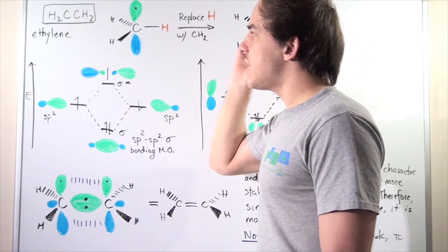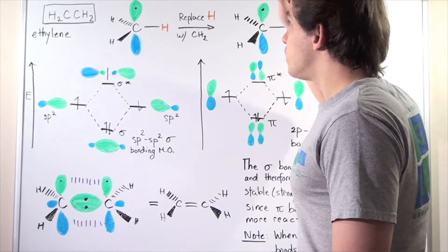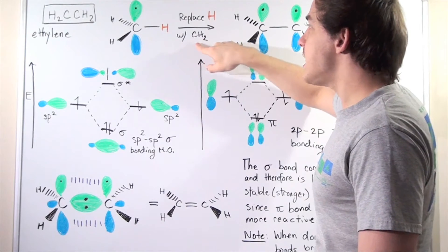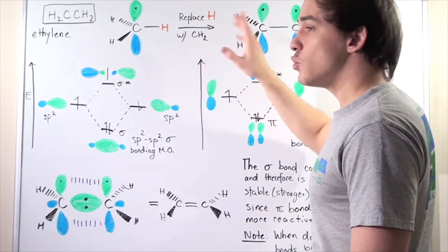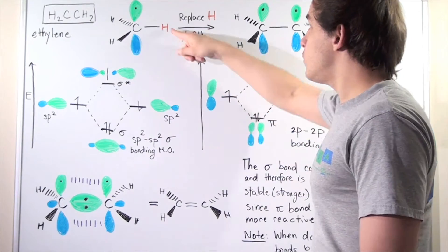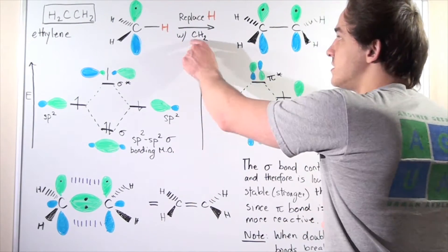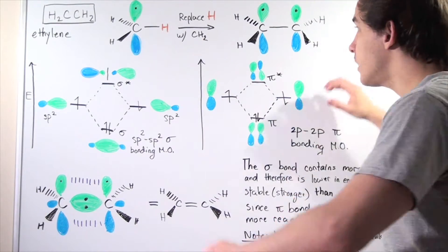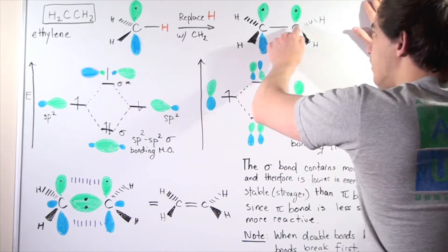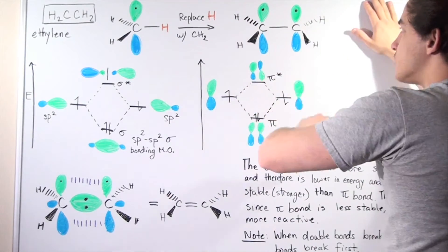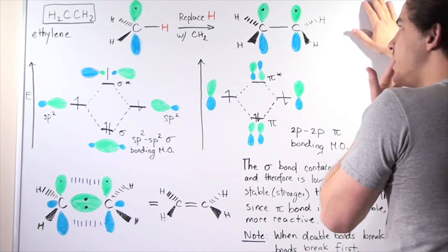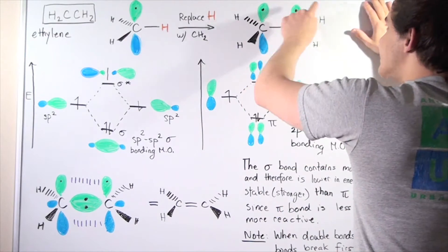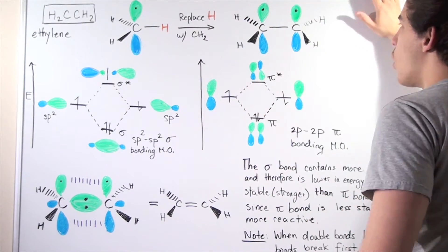To build ethylene, let's simply replace one H atom with a CH2 molecule. What we get is a carbon-carbon bond, four C-H bonds — two on each side — and a 2p orbital on both carbons, each containing one electron.